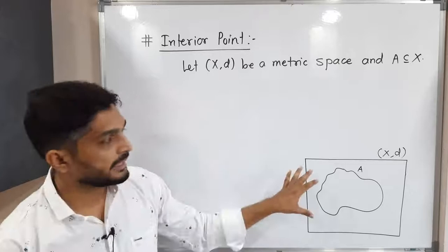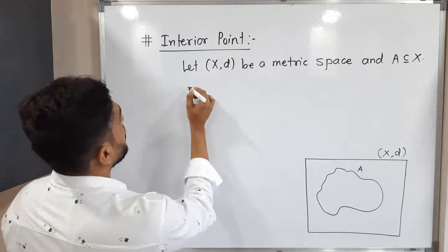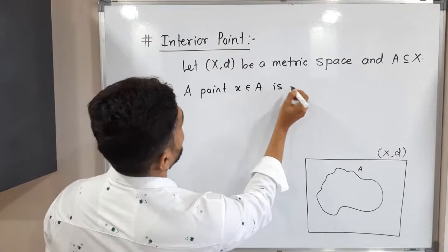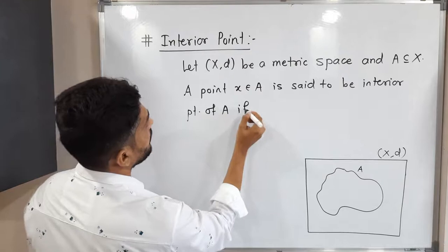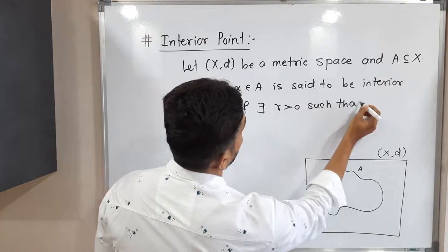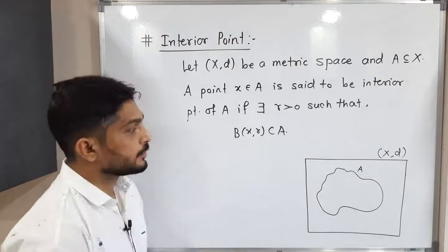Let us discuss this concept: interior point. We consider a metric space (X, d), and A is a subset of X. Definition: a point x belonging to A is said to be an interior point of A if there exists r greater than 0 such that B(x, r) is a subset of A.